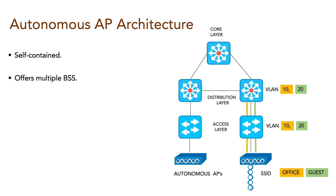Each Autonomous AP must also be configured with a management IP address so that it can be remotely accessed using Telnet, SSH, or a web interface — to configure the SSID, which channel to use, and what power levels to use. For management traffic to pass through the trunk, we have assigned VLAN 100.